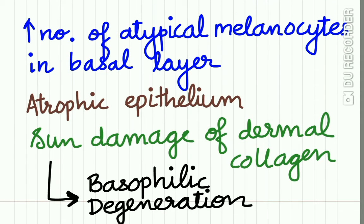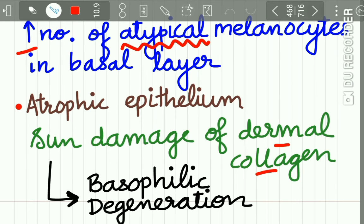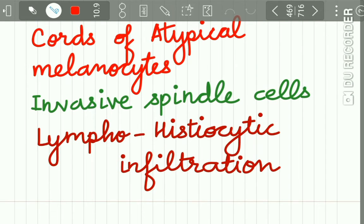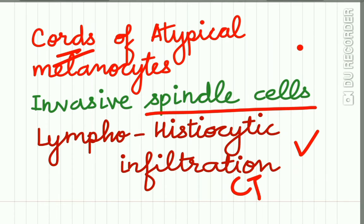In lentigo malignant melanoma, there is an increase in the number of atypical melanocytes in the basal layer, and the epithelium becomes atrophic. There is sun damage to the dermal collagen, called basophilic degeneration. There are cords of atypical melanocytes, invasive spindle cells, and lymphohistiocytic infiltration in the connective tissue.